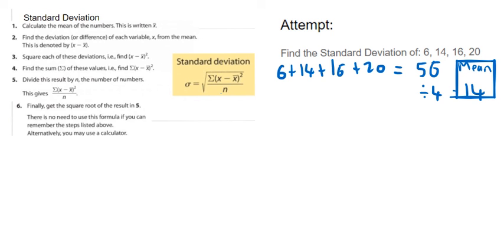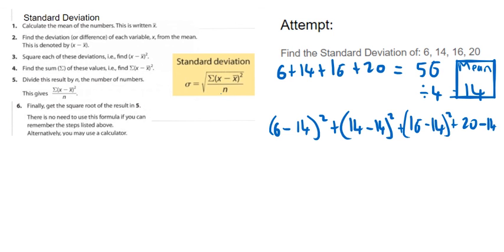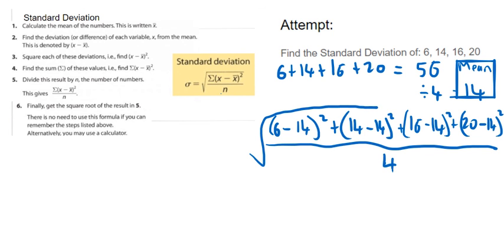And then I'm going to take each piece of data in it again. So 6 first. So 6 take away 14 and then all to be squared plus 14 take away 14 all to be squared plus 16 take away 14 all to be squared plus 20 take away 14 all to be squared. And then I'm putting it over 4 this time because there's 4 numbers in it. And then the square root.